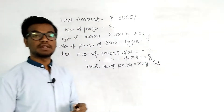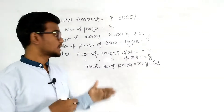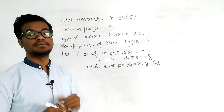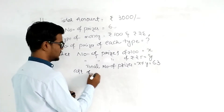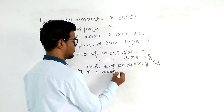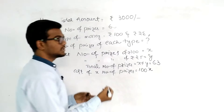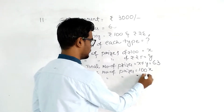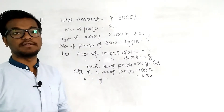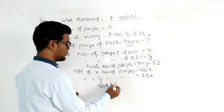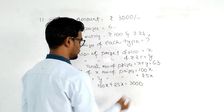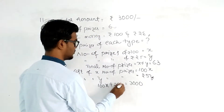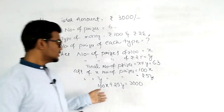The cost of X number of prizes is 100X, because each prize costs 100 rupees. The cost of Y number of prizes will be equal to 25Y. Adding both gives us 100X plus 25Y equals 3000. So our two equations are: X plus Y = 63, and 100X plus 25Y = 3000.